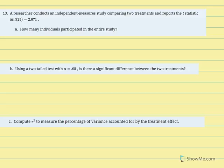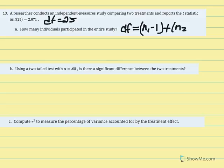Number 13: a researcher conducts an independent measures study comparing two treatments and reports the t statistic as t(25) equals 2.071. In parentheses is always the degrees of freedom. Degrees of freedom equals 25. Part A asks how many individuals participated in the entire study. For independent measures t-tests, degrees of freedom equals n1 minus 1 plus n2 minus 1. So 25 equals n1 plus n2 minus 2.